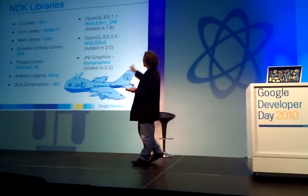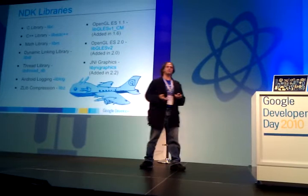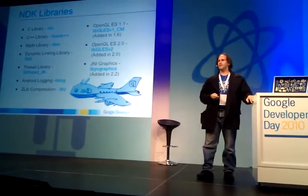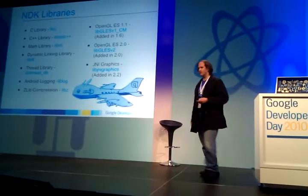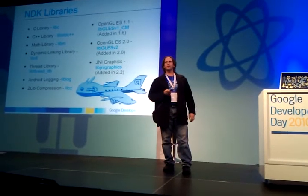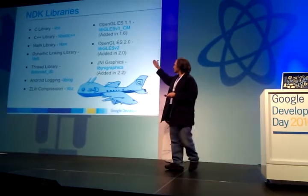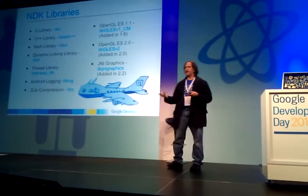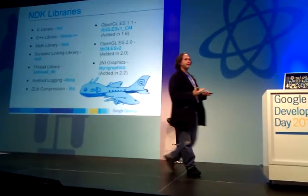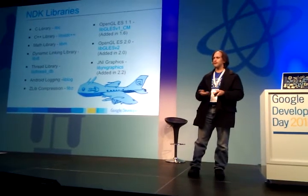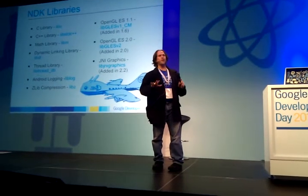So what do you get in the NDK? All of these droid icons were drawn on the whiteboard of Building 44 by one of the engineers on the team — I thought they were cool enough to put into this presentation. You get C, you get a little bit of standard C++, math, threads, logging, compression, and a little bit of GLES. And in Froyo, you actually get what we call JNI now, which is kind of cool. So you can actually get a little closer to writing directly with the framework — not quite, but a little bit closer.